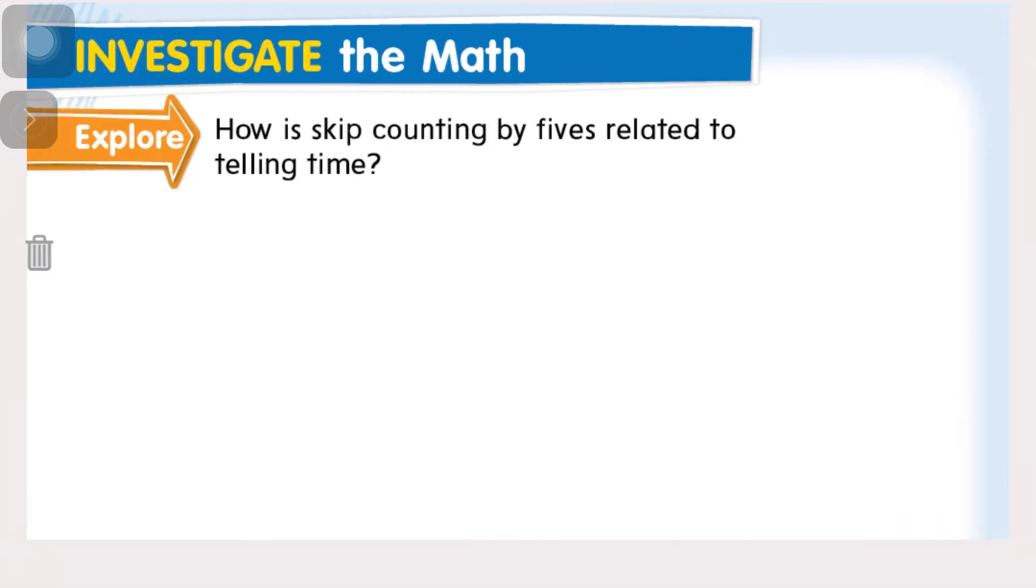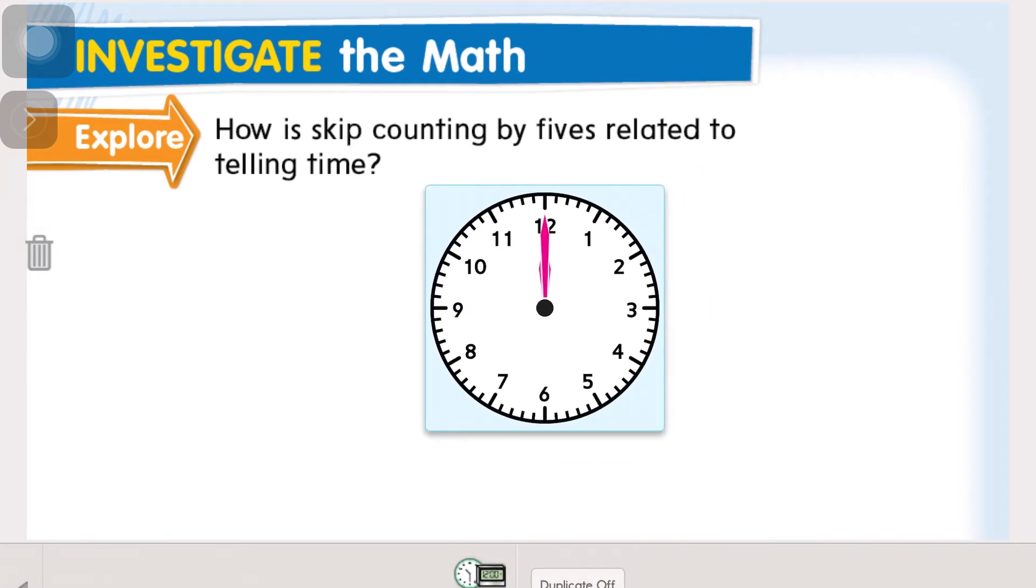How is skip counting by fives related to telling time? When we get to each number on the clock it represents the interval of five minutes passing. So when we skip count by fives, it's the same thing as counting the numbers on the clock for the minute hand. Each one of these little guys in here is a minute, so we have 12:01, 12:02, 12:03, 12:04, 12:05. But every time we move a number, it's five minutes. So if you can skip count by five, that'll make telling time so much easier.